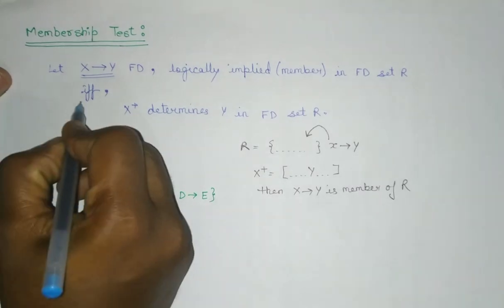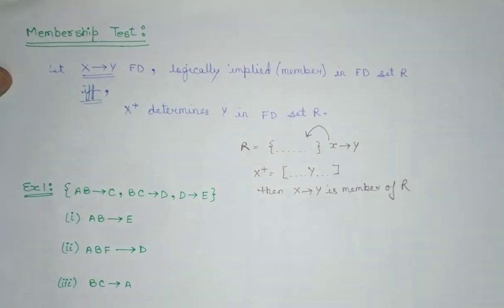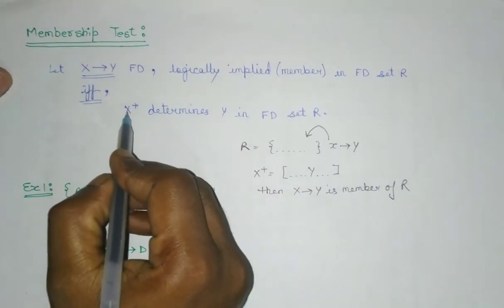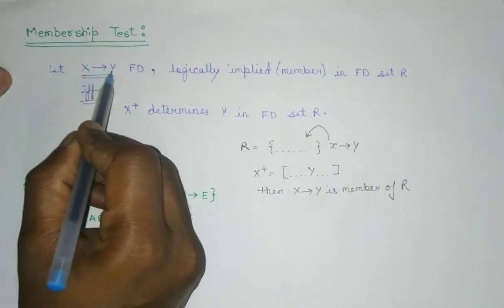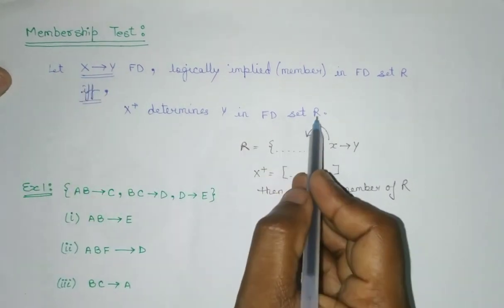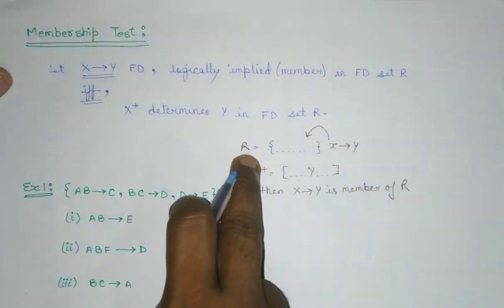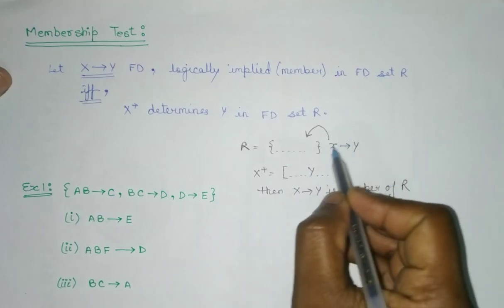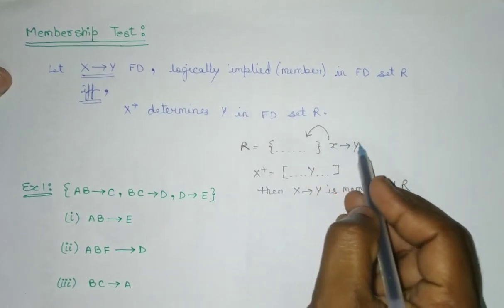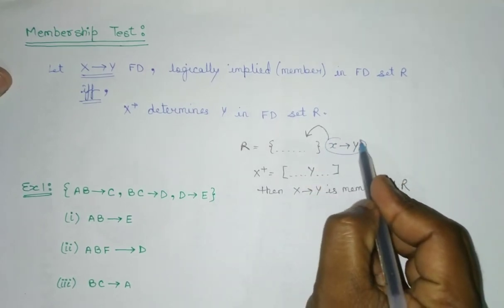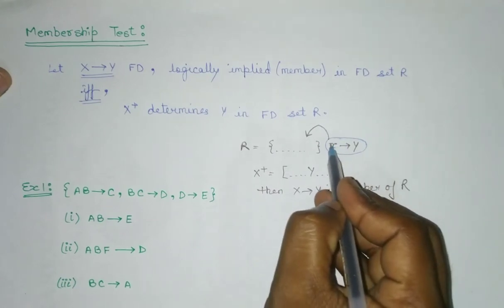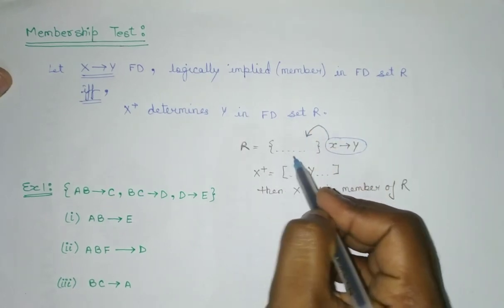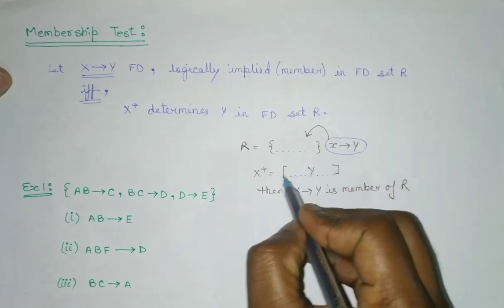if and only if, what is the meaning of IFF? It is if and only if, the closure of X should determine Y in functional dependency set R. So R is any functional dependency set and X, Y belong. X implies Y.